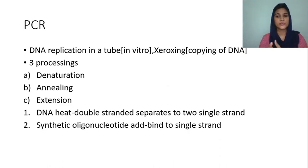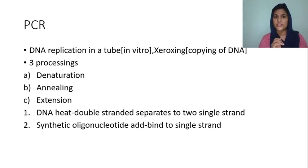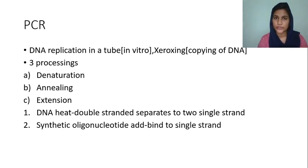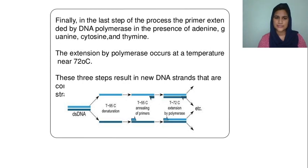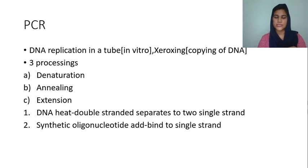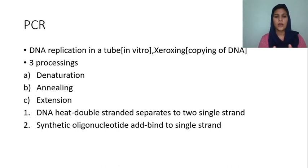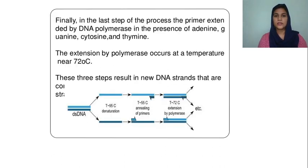In PCR — Polymerase Chain Reaction — the first process is denaturation, where the double strand DNA is separated into two single strands. The second process is annealing, where synthetic oligonucleotide primers are added to the single strand at a temperature of 55 degrees Celsius. Denaturation occurs at 95 degrees Celsius.